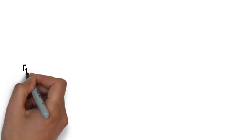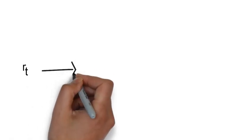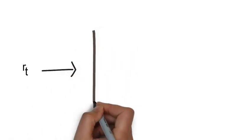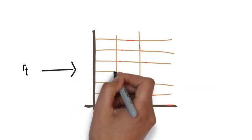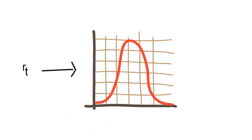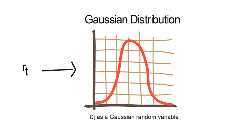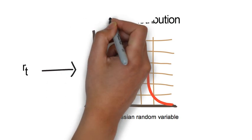And lastly, if you want that the return rt follows a specific return distribution, you need to put that distribution onto epsilon t. For example, if conditional on Ft-1 rt shall follow a Gaussian distribution, you have to model epsilon t as a Gaussian random variable.